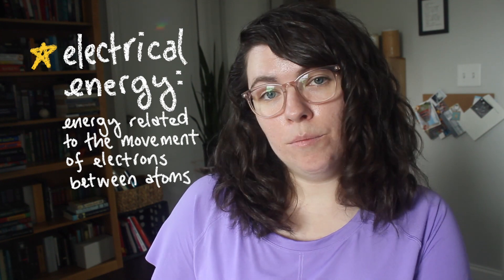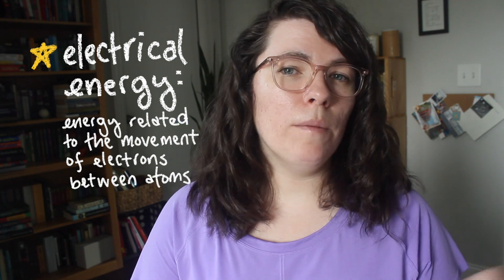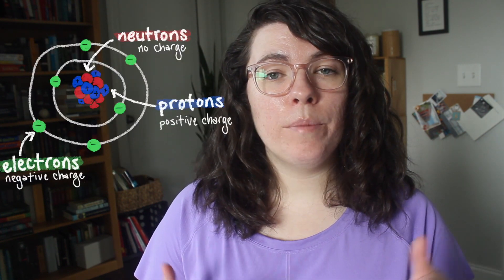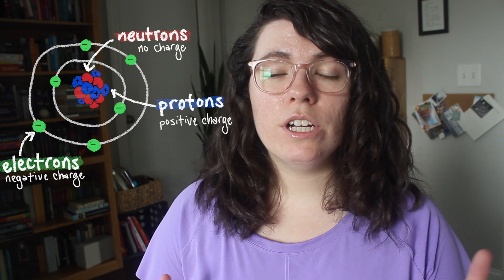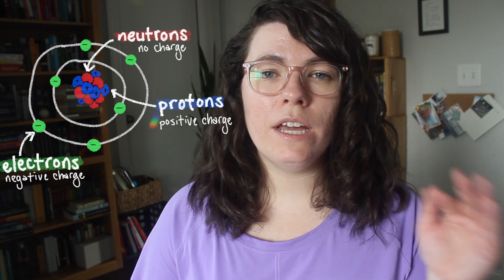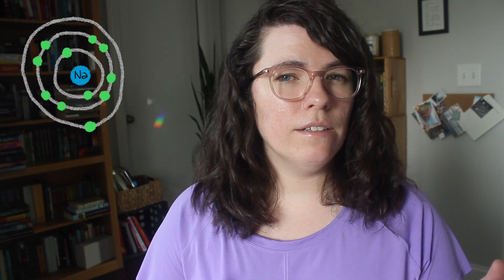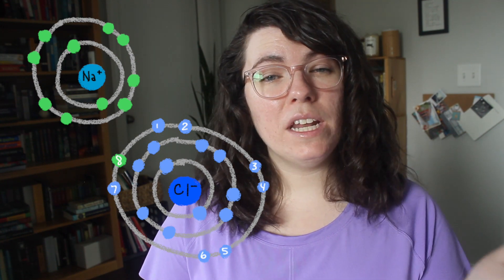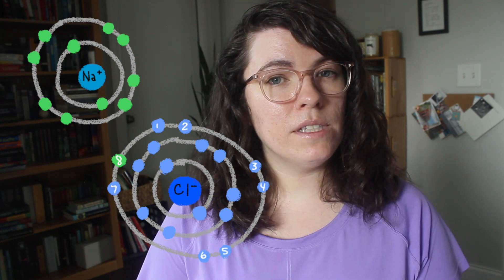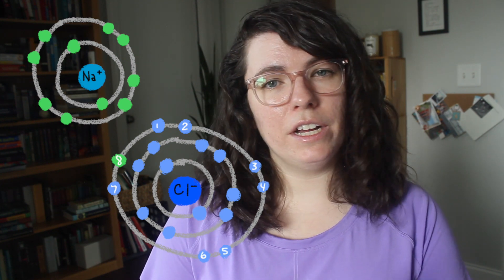Electrical energy has to do with the movement of electrons. All matter is made of atoms, and atoms are composed of subatomic particles called protons, neutrons, and electrons. Electrons are constantly orbiting or moving around the nucleus of the atom. Some elements have electrons that are only loosely attracted to their nuclei and therefore can be moved easily between atoms. That movement of electrons between different atoms creates what we call a current of electricity.